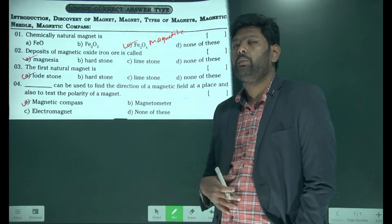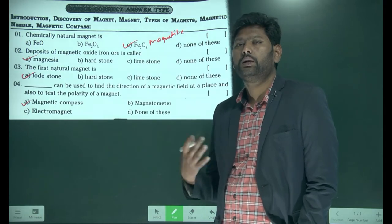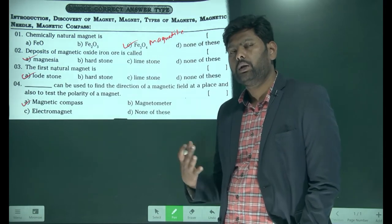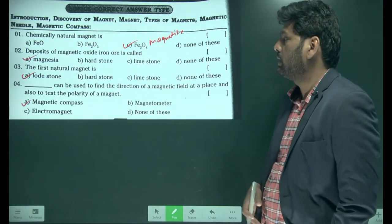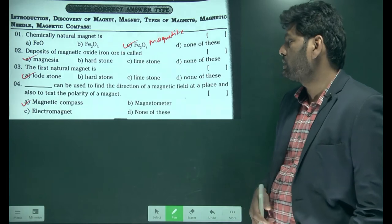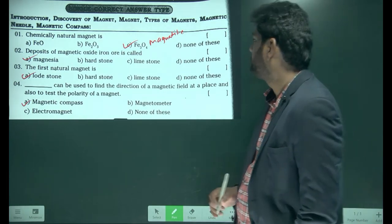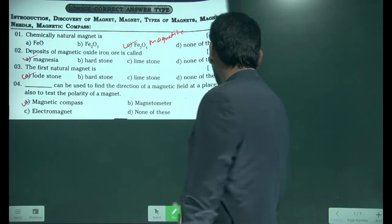To find those poles, we generally use a compass needle, so the first option is right.